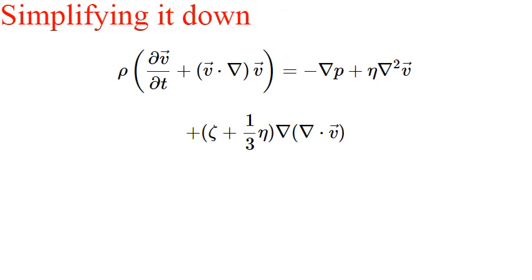Now let us look at ways we can make this equation seem a bit nicer. In the case of an incompressible fluid, the divergence of the vector v goes to zero. I will not go into the reasoning behind this in this video. This means that the last term on the right hand side vanishes.